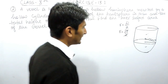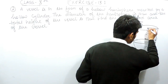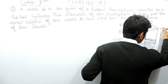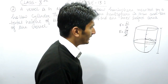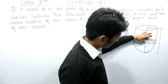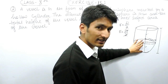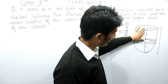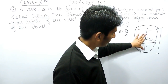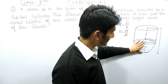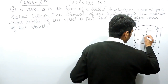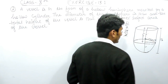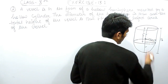The total height of the vessel is 13 centimeters. Since the radius of the hemisphere is 7 centimeters, it also acts as the height of the hemisphere portion. So the remaining height, which is the height of the cylinder, will be 13 minus 7, which equals 6 centimeters.